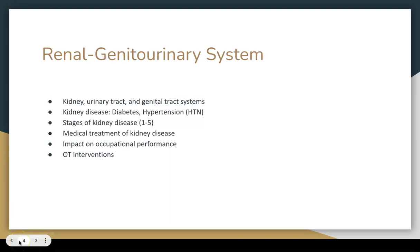Just as important as bowel function is urinary function. The renal genitourinary system includes the kidney, urinary tract, and genital tract. Within disorders of this system falls diabetes — three in every ten individuals with diabetes develop kidney failure. Big picture, we can facilitate nutrition, exercise, and address the side effects related to diabetes. As we learned from the prosthetics lab, one of the number one causes of limb loss is directly related to diabetes and peripheral vascular disease.